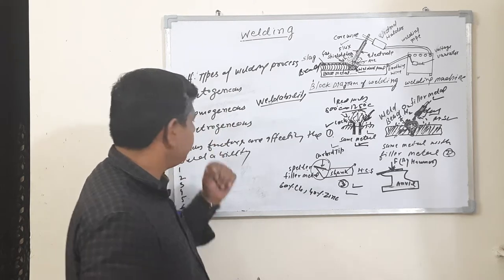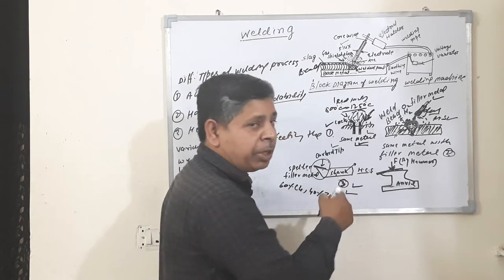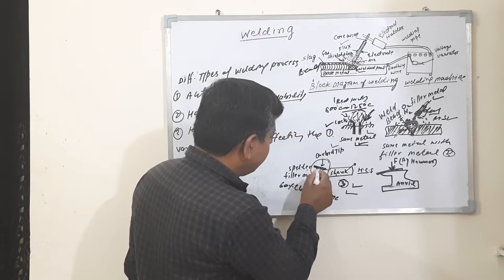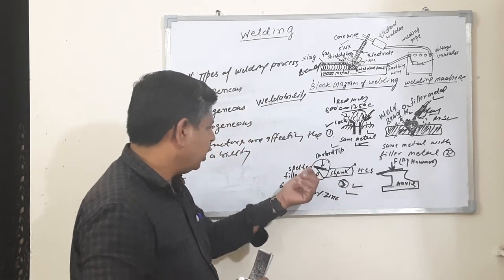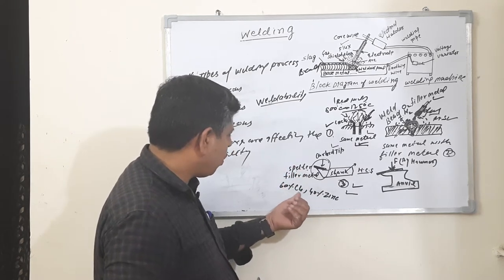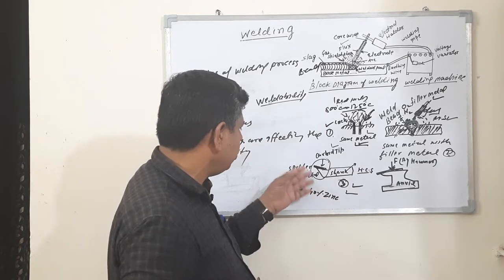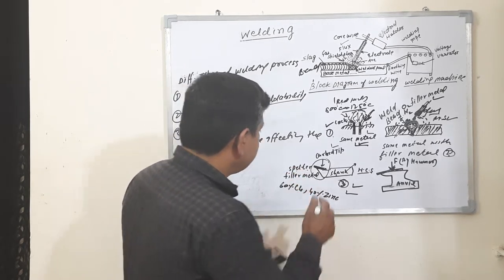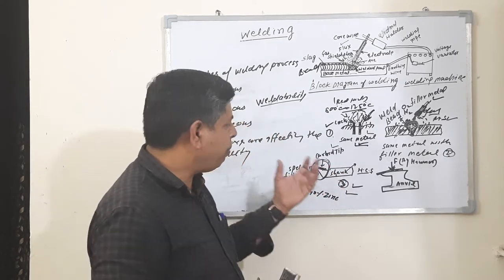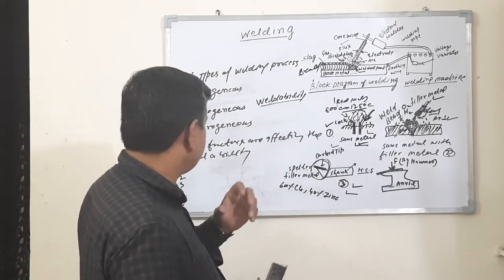Third is the heterogeneous process. Heterogeneous means the materials are dissimilar — for example, high carbon steel and carbide tips welded at a slotted piece with the help of a spelter. Spelter is the filler metal; it is an alloy of copper and zinc — 60% copper and 40% zinc. This area is heated and welded with the help of brazing. Brazing is the best example of the heterogeneous process.